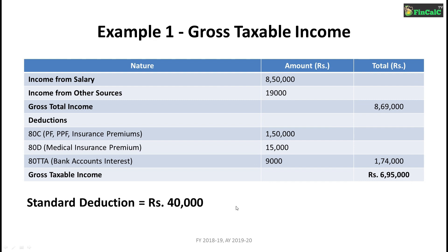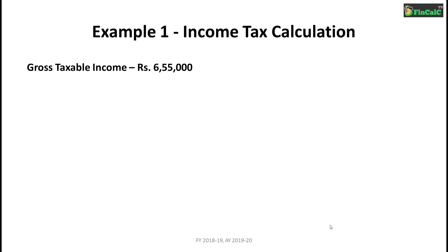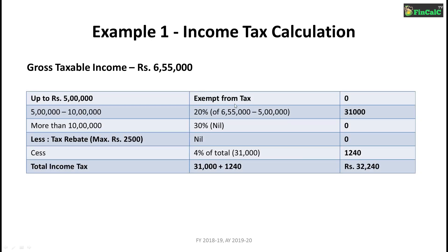A standard deduction of Rs 40,000 was introduced in Budget 2018, which brings our gross taxable income to Rs 6,95,000 minus Rs 40,000, equal to Rs 6,55,000. To calculate income tax on Rs 6,55,000: 0% tax on income up to Rs 5 lakhs; 20% tax on income between Rs 5 lakhs and Rs 10 lakhs, which comes to Rs 31,000 based on Rs 6,55,000 minus Rs 5 lakhs.